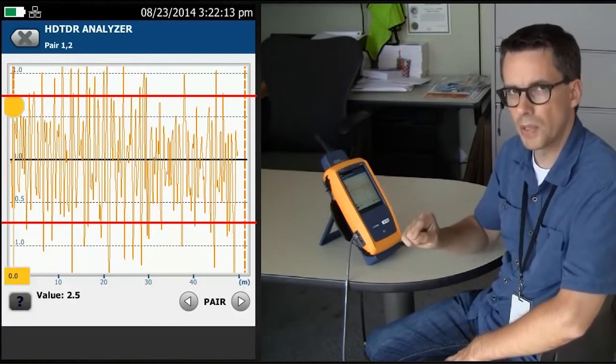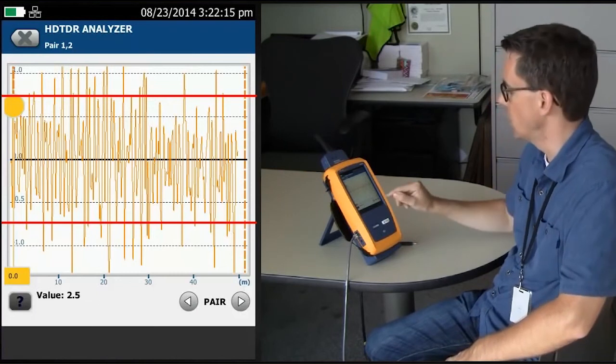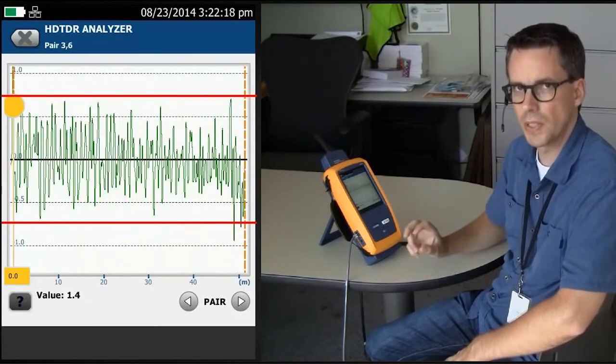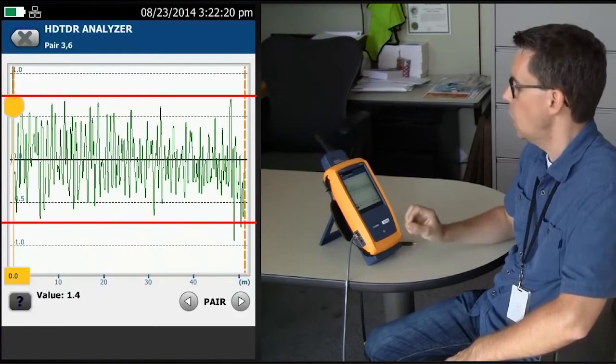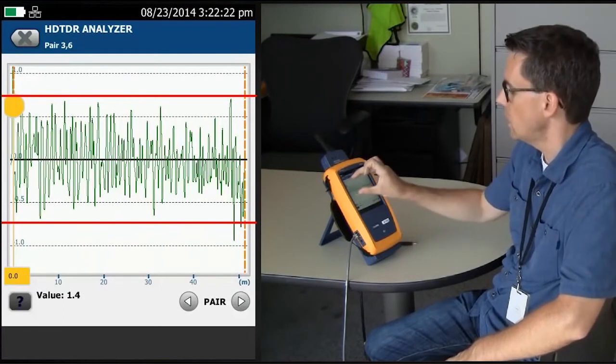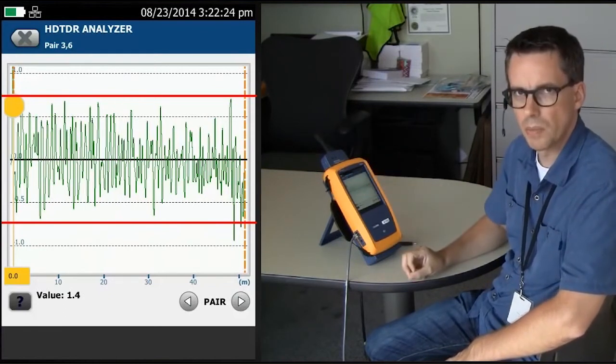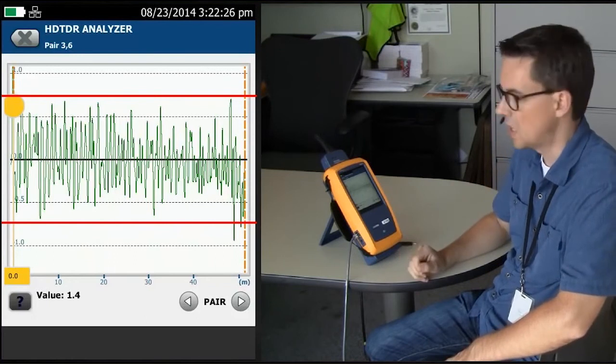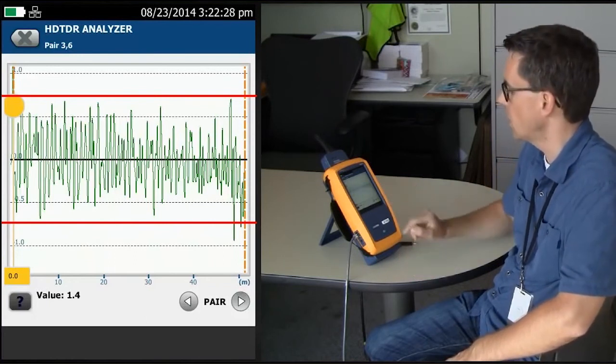But the other pairs did pass with good margin. So when I look at those TDR responses, I see a very different trace, a lot cleaner, not even close to my 0.8 percent, my minus 0.8 percent guide. And again, I can look at the other pair as well.